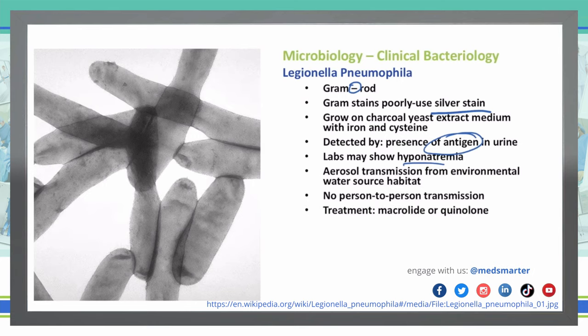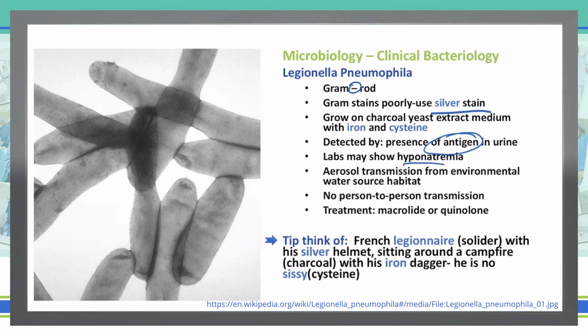To treat it, we're going to use a macrolide or a quinolone. A helpful mnemonic: a Legionnaire is a French term for a soldier — they usually have silver helmets, so silver stain. They're often seen sitting around a campfire, so charcoal — that's the charcoal yeast extract used to detect it. And that charcoal yeast extract has iron and cysteine, because he is no sissy. If you do well with mnemonics, this will be helpful.